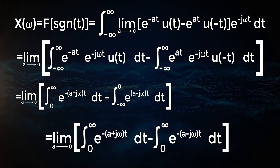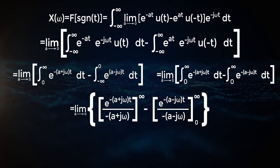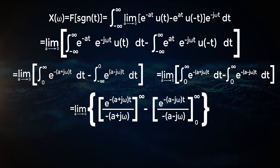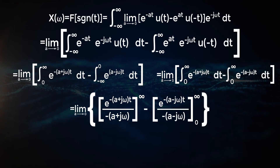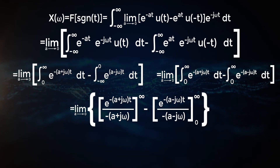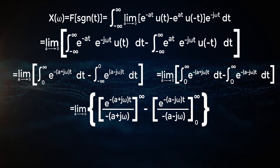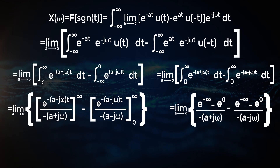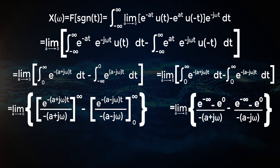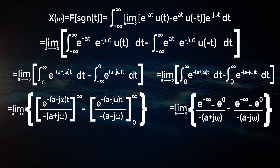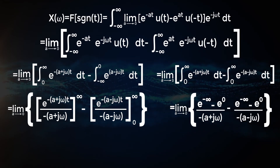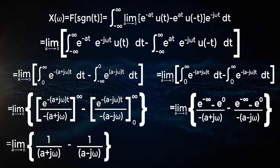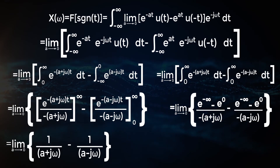Which is equal to the limit as a approaches zero of [e^{-(a+jω)t} divided by -(a+jω)] for limits 0 to infinity, minus [e^{-(a-jω)t} divided by -(a-jω)] for limits 0 to infinity. Substituting the limits: [e^{-∞} minus e^0] divided by -(a+jω) minus [e^{-∞} minus e^0] divided by -(a-jω).